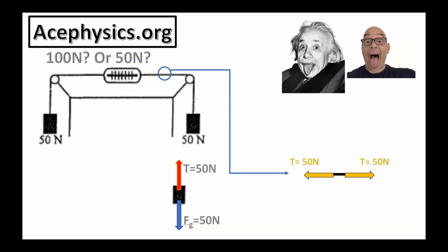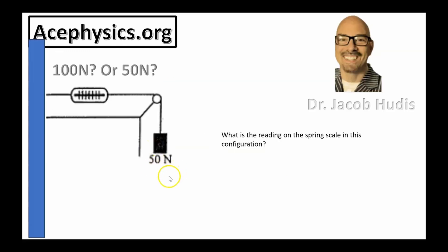And now for configuration B. There's the same 50 Newton mass. It's attached to a rope with tension in it. There's a spring scale, and then the rope is attached to a wall. And, of course, this is in equilibrium. What is the reading on the spring scale in this configuration?